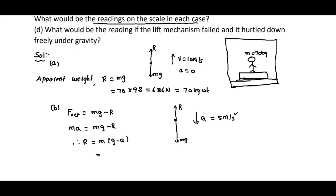Substituting values: R = 70 × (9.8 − 5) = 70 × 4.8 = 336 N, which is equal to 34.29 kg weight. That means the apparent weight, or the reading shown by the weighing machine, is smaller compared to the original weight of the man.